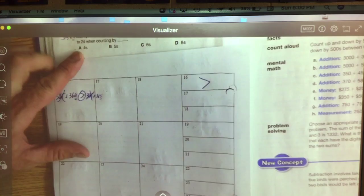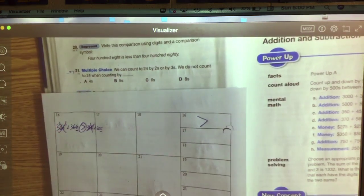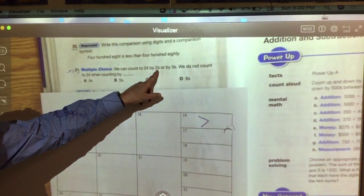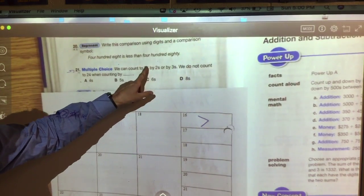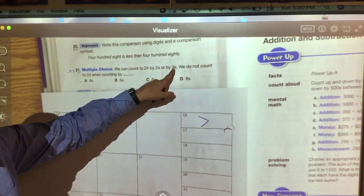Alright, if you turn the page, I've got a few more that I want to show you and give you some help with. 21, we've done this one a couple of times. We can count to 24 by 2s or 3s. 2, 4, 6, 8, 10, 12, 14, 16, 18, 20, 22, 24. By 3s, if you're following along on your chart it's really easy: 3, 6, 9, 12, 15, 18, 21, 24. Good.